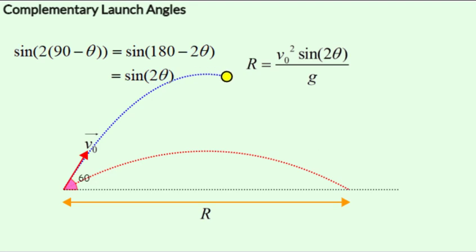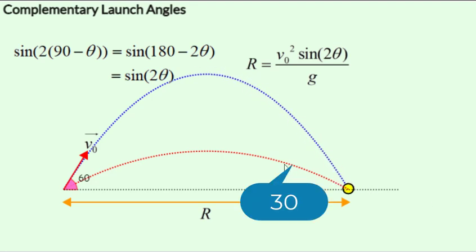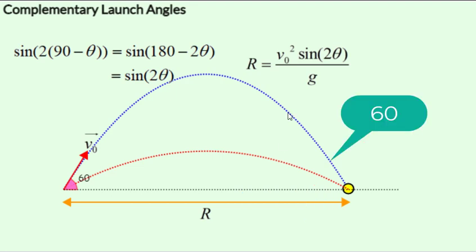So in this example, you see that this trajectory corresponds to the 30 degree launch, and this is the 60 degree launch, and we get the same range.